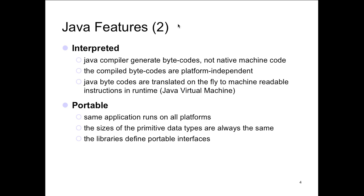Java is interpreted so it generates bytecode, not native machine code. The compiled bytecodes are platform independent — you can take the same applet, run it from a JVM started from a web browser, run it on a Windows system, run the same bytecode on a Mac. It all runs the same. Bytecodes are translated on the fly and read by the JVM — Java Virtual Machine. Most of you as consumers are familiar with that — you've seen error messages on websites saying you don't have the JVM installed.